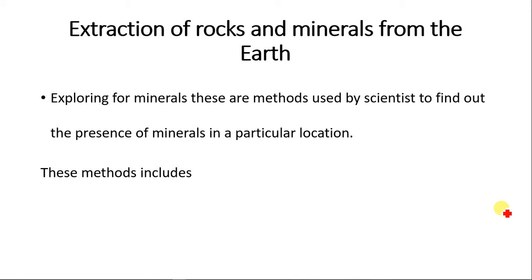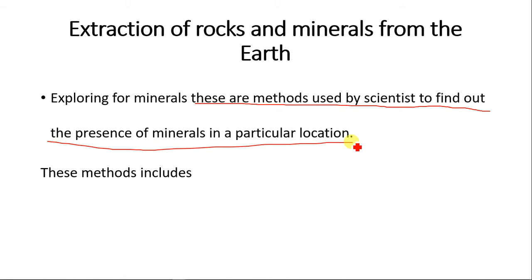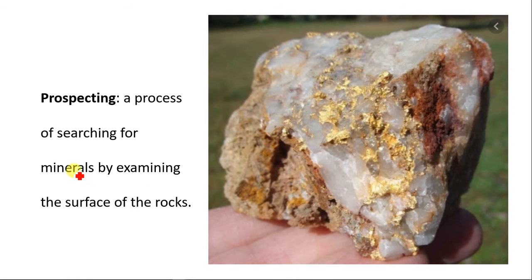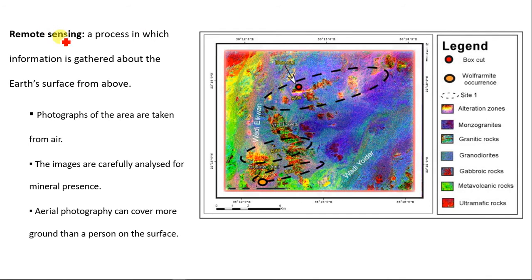Now we look at extraction of rocks and minerals — specifically, exploring for minerals. These are methods used by scientists to find out the presence of minerals in a particular location. One method is prospecting: a process of searching for minerals by examining the surface of rocks to find the mineral contents inside. Another method is remote sensing: a process in which information is gathered about the earth's surface from above, since every material absorbs different rays of electromagnetic radiation.